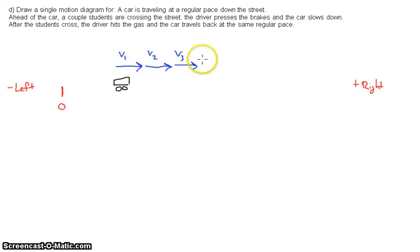Okay then a couple students are crossing the street, the driver presses the brake. So I'm going to represent a change in that motion by vertical dotted line and then use arrows to show the car pressing the brake. So if it's braking it's going to be reducing its speed, decreasing its velocity. So I have three more arrows here: V4, V5, and V6. We can see clearly that they're getting smaller so the car is slowing down.